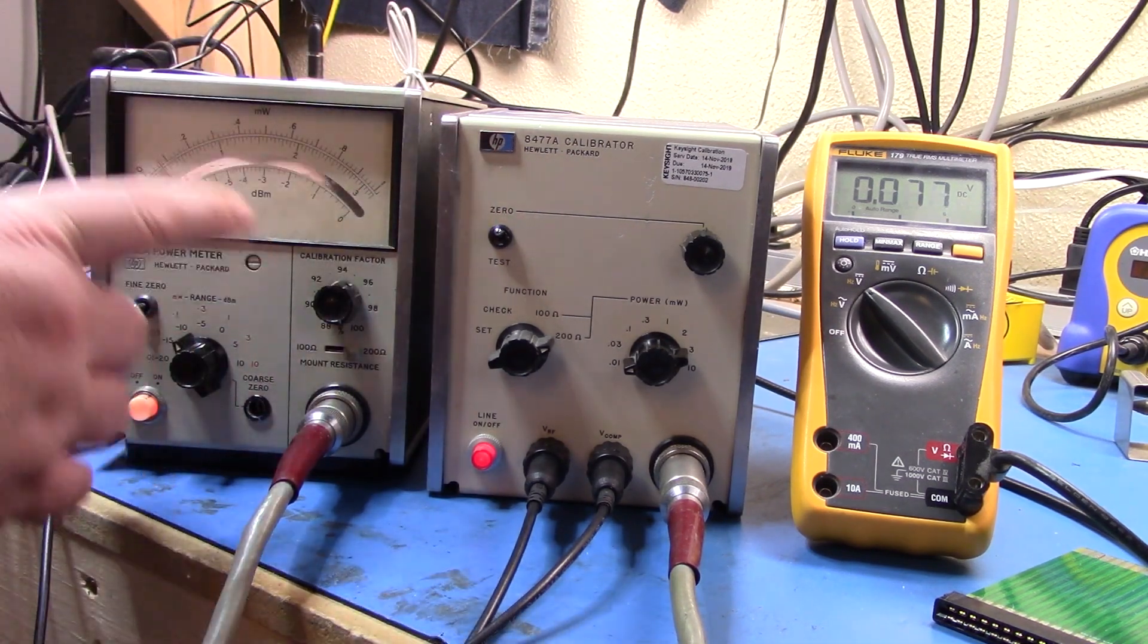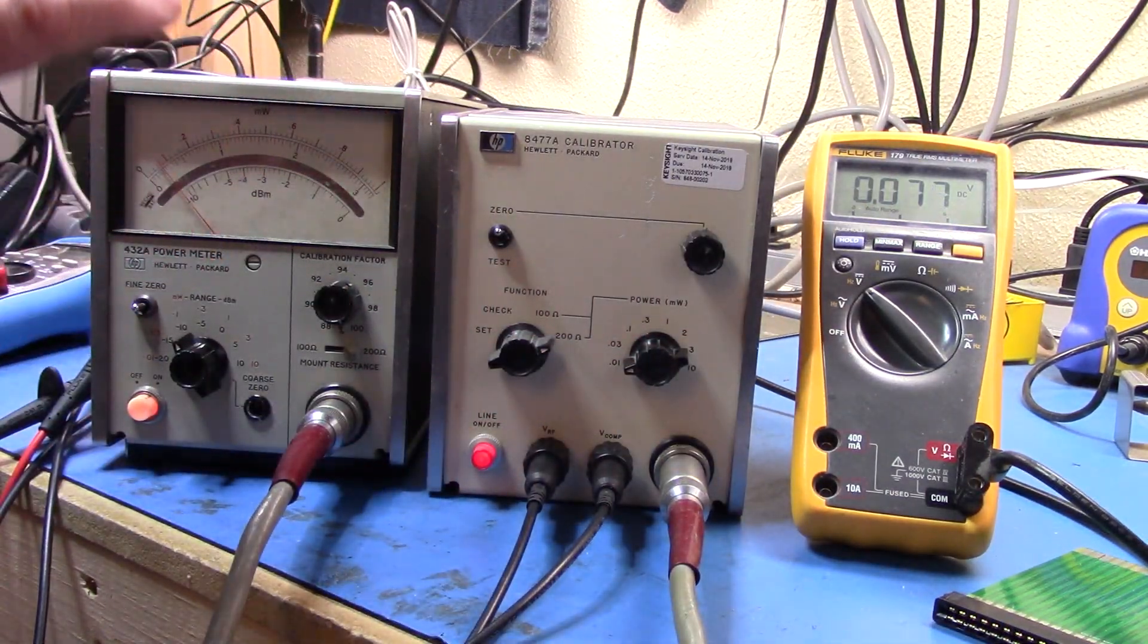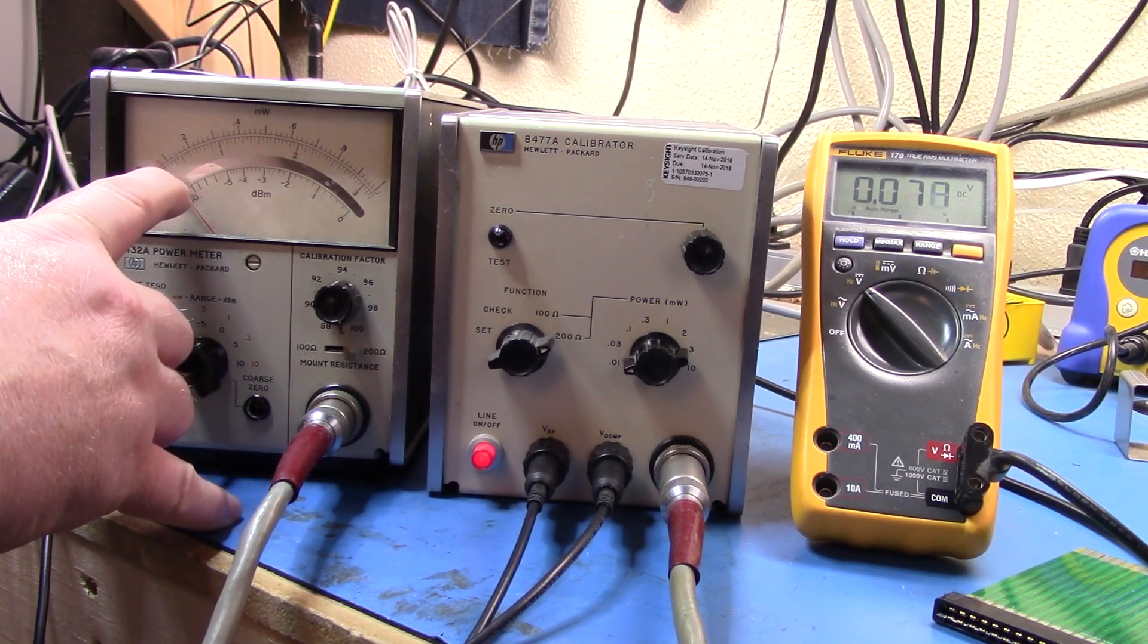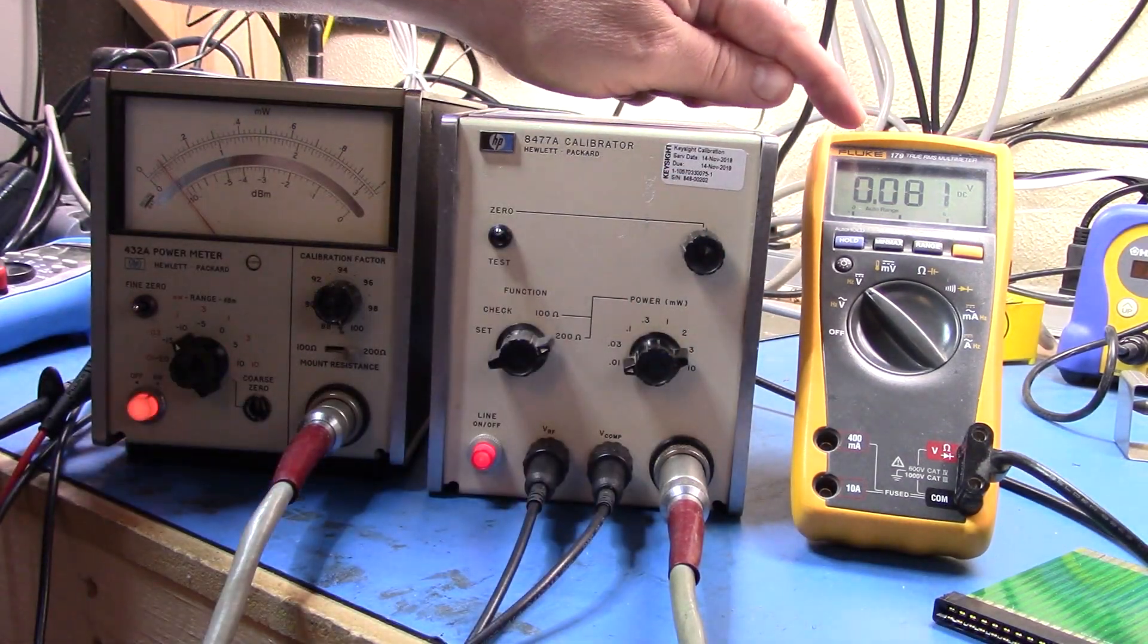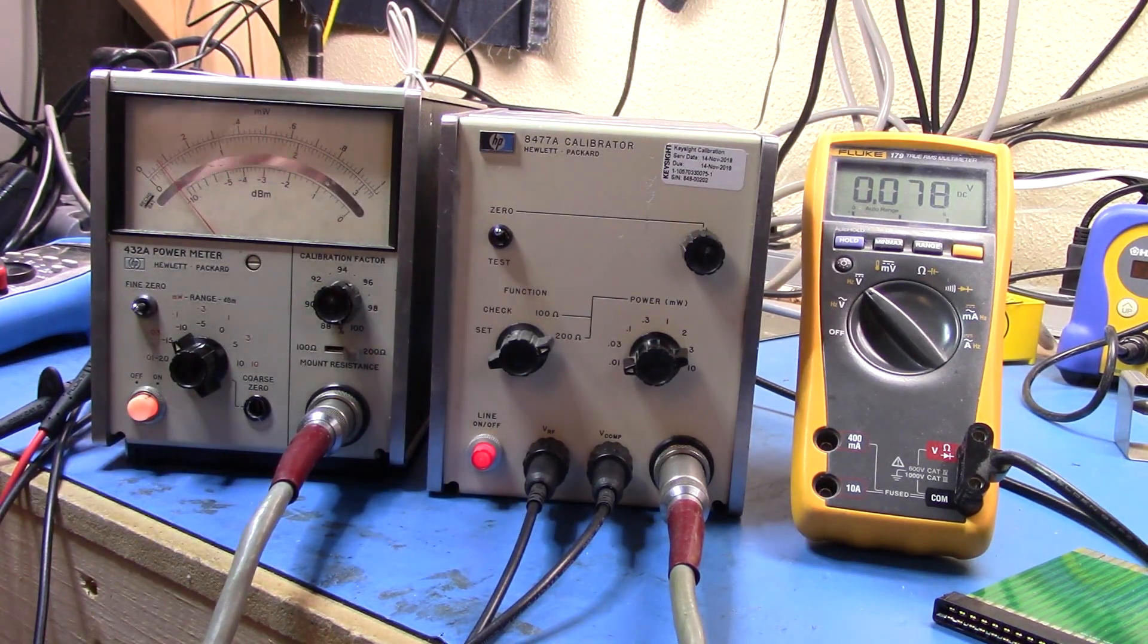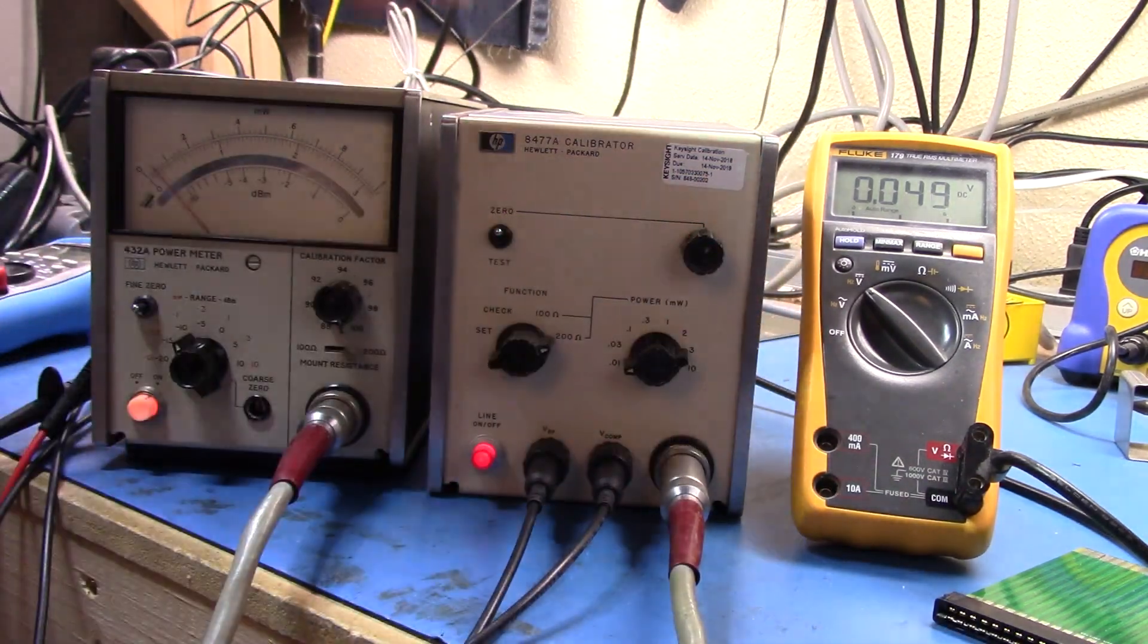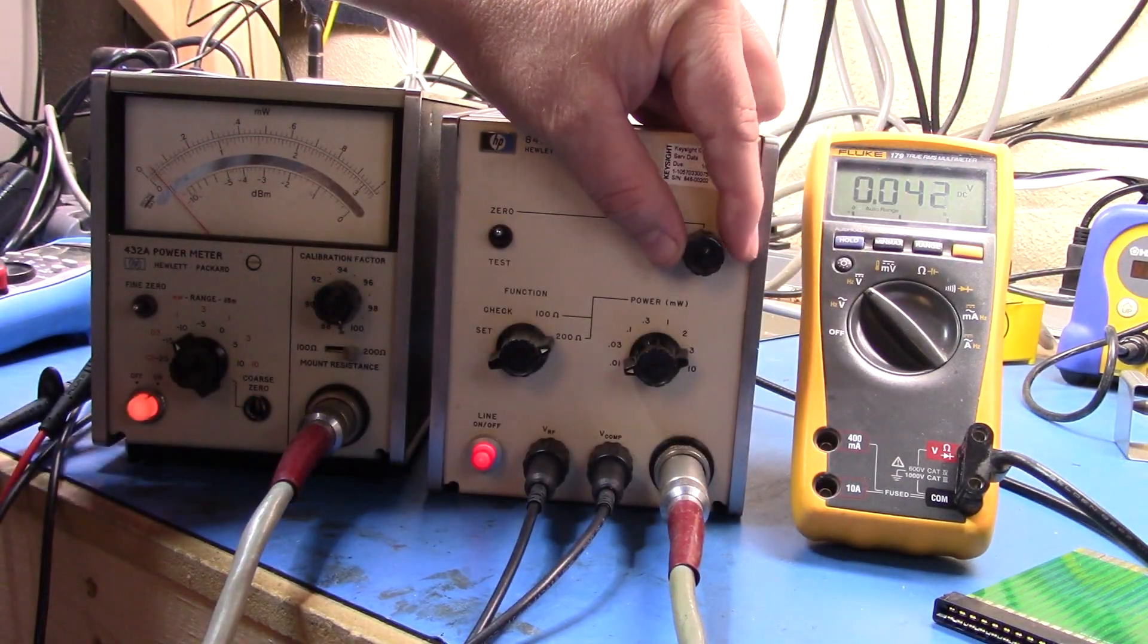So the first step is to come in and set the unit up. You want to check for meter accuracy and to start with that, you want to get the 8477A and the 432A to have the meter needle be right on 0. So to do that, you're supposed to end up with between 0 and plus or minus 2 millivolts. So let's start dragging that down and we should see, you might be able to see the meter needle come down and you should see the voltage come down there.